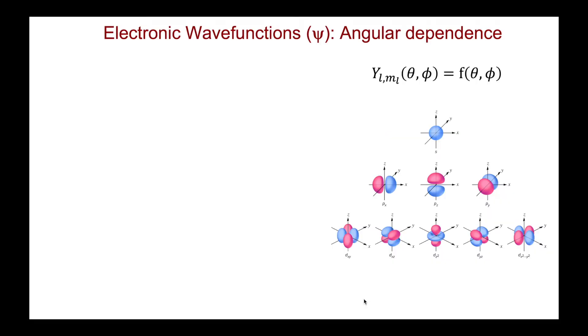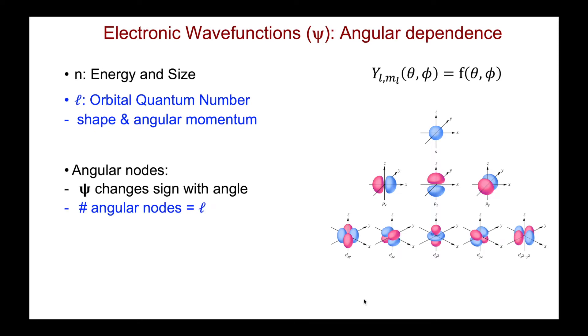We now turn to the angular components of the electronic wave functions and look at their angular dependence and the implications for the phases of the wave function. While the principal quantum number n determines the energy and size of the orbitals, l, the orbital quantum number, determines the shape and also the angular momentum of an electron within that orbital. At an angular node, the wave function changes sign with angle, and the number of angular nodes is equal to the orbital quantum number l.